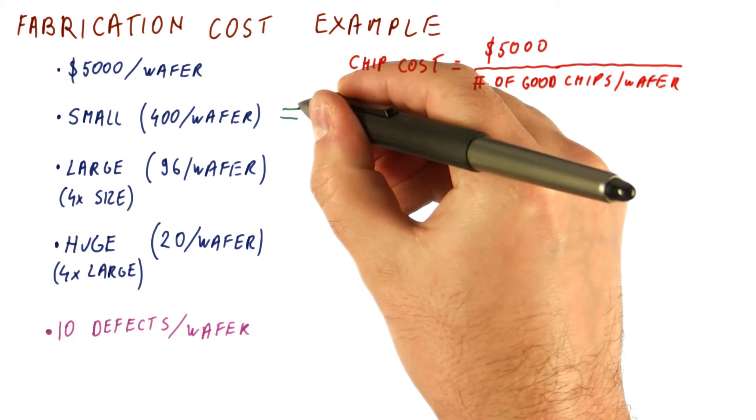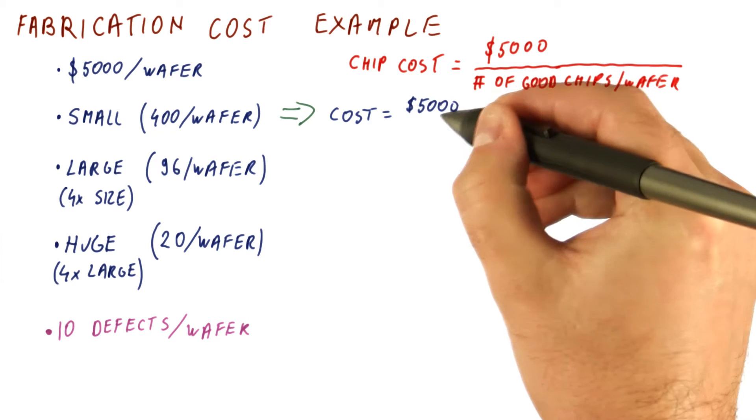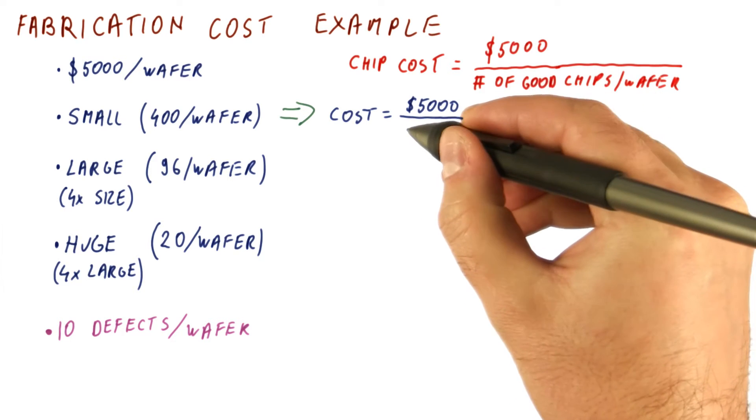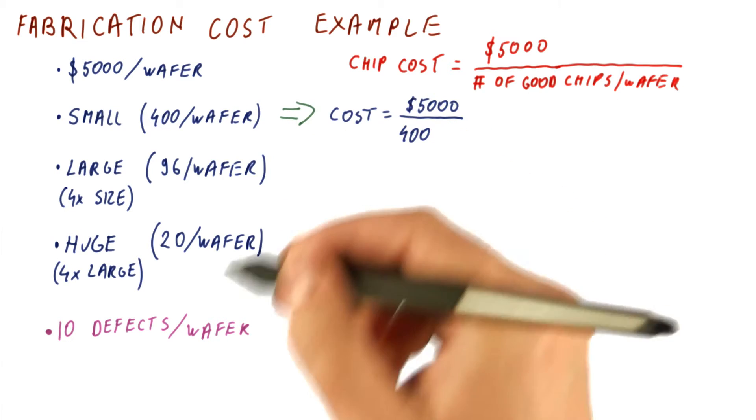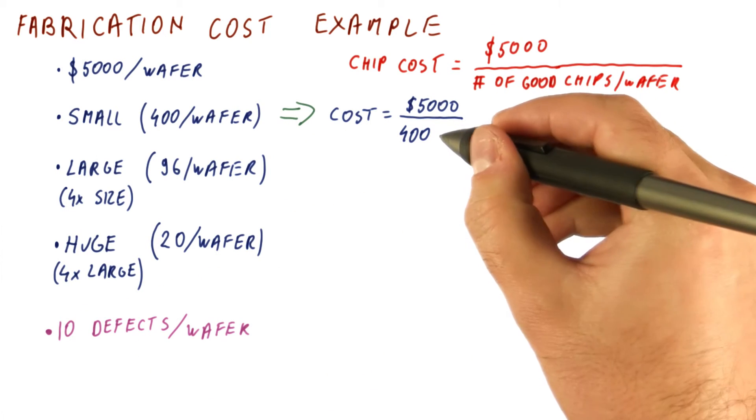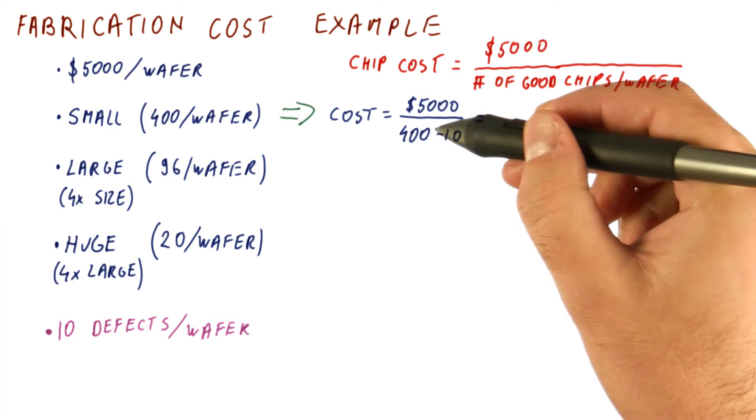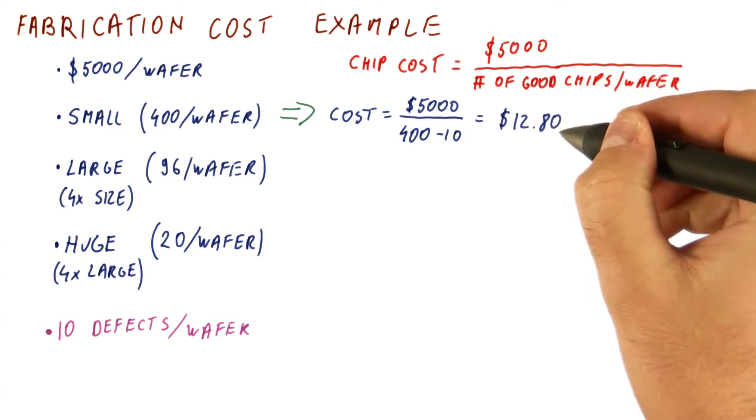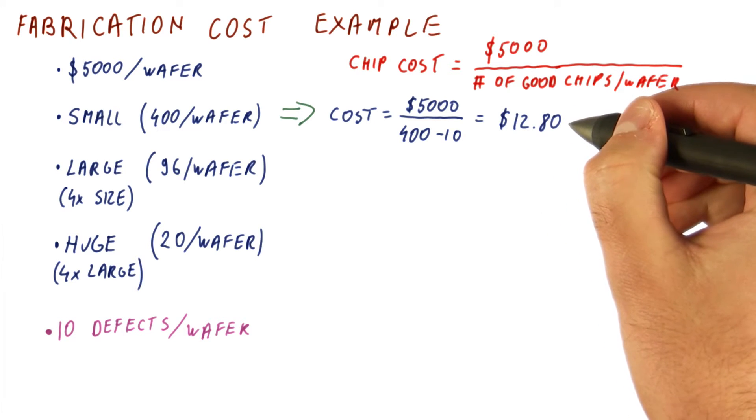So now for our small chips, what we get is that the cost is equal to $5,000 divided by, we have 400 chips on a wafer but we lose 10 to defects, so we really have $5,000 for 390 chips. And that gives us a cost of $12.80 to manufacture a working chip.